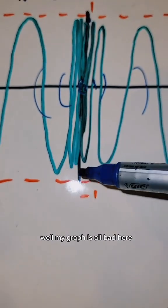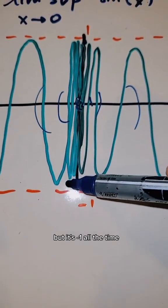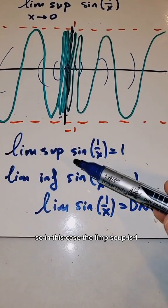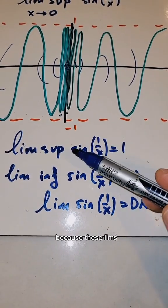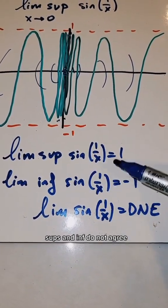My graph is all bad here, but it's minus one all the time. So in this case, the limsup is one, the liminf is minus one. So the limit itself does not exist because these limsup and inf do not agree.